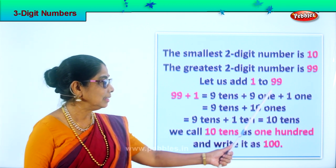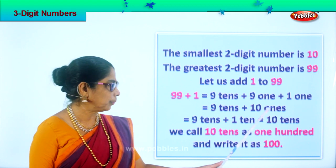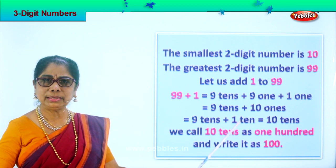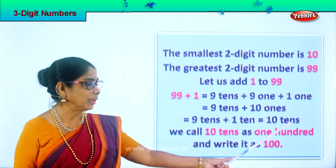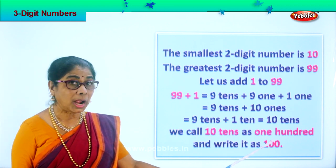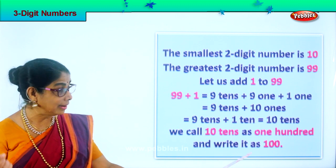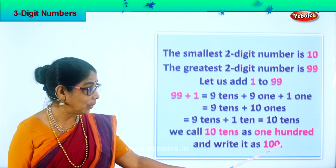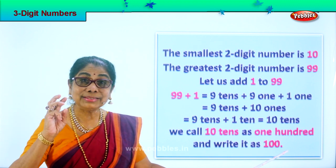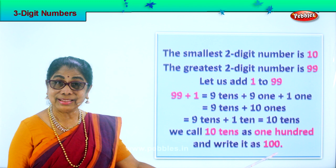Here you have nine tens. Here you have nine plus one — ten ones. We cannot keep ten ones, so nine tens plus one more ten makes ten tens. What is ten tens? We call ten tens as one hundred. So one hundred is a three digit number because it has one and two zeros.